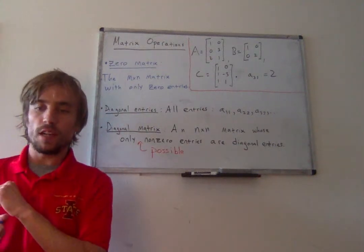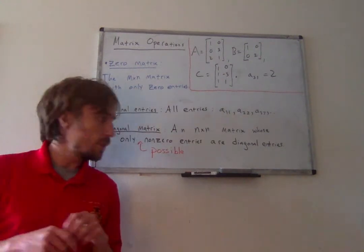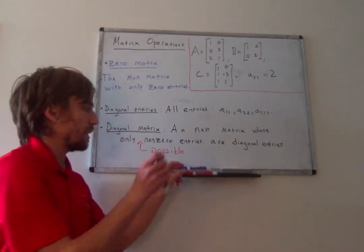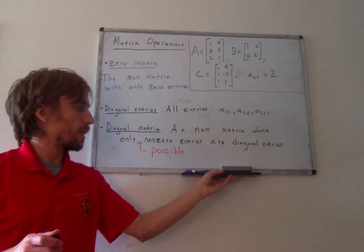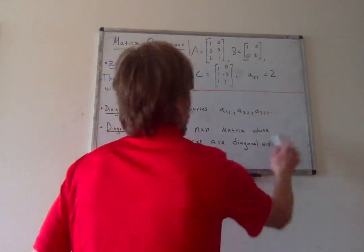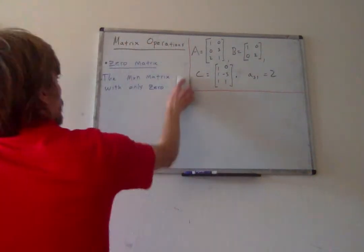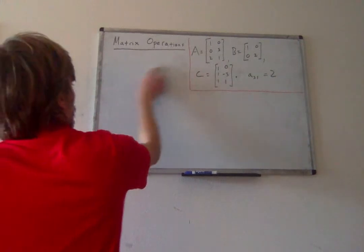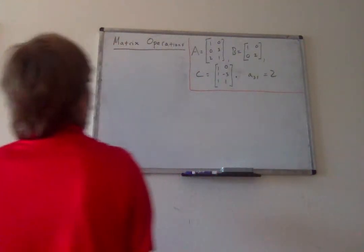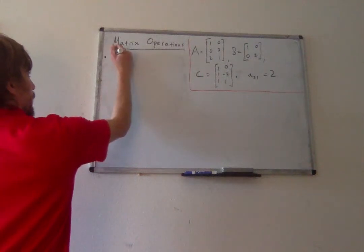So all of these definitions out of the way, why do I have three matrices on the board? Because it turns out we can do, like I said, matrix addition and scalar multiplication, much like we did with vectors. So we'll do a scalar multiplication first.